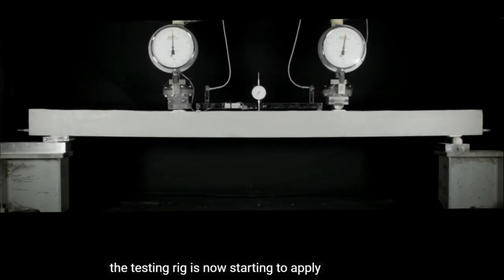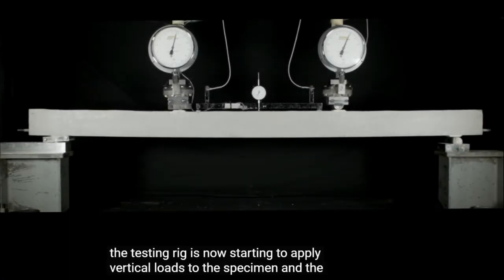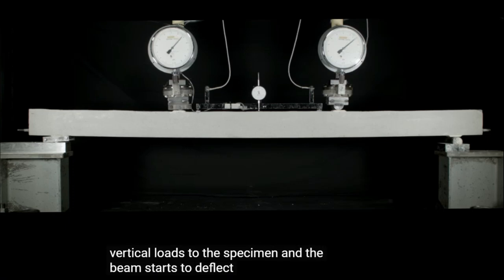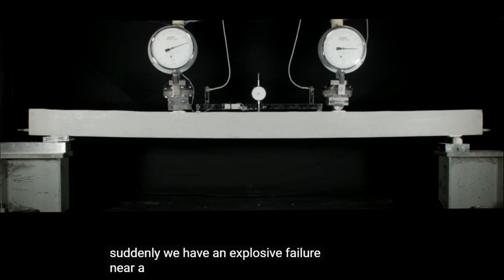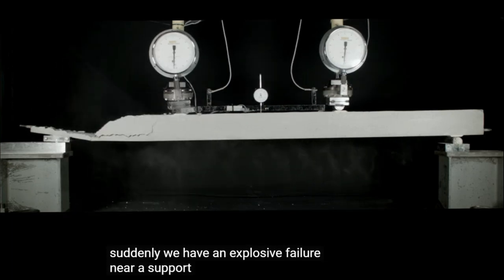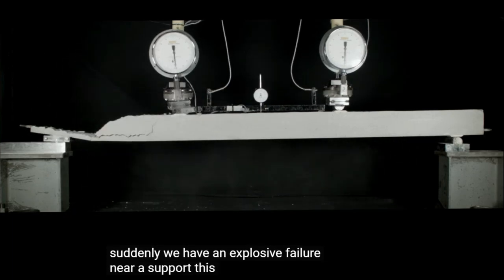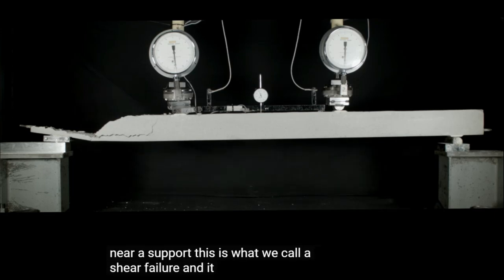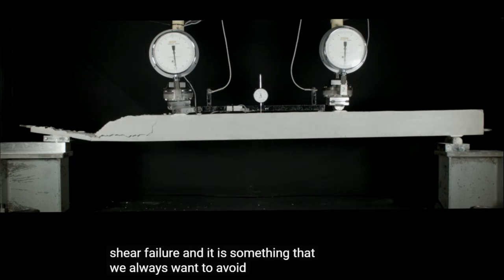The testing rig is now starting to apply vertical loads to the specimen, and the beam starts to deflect. Then quite suddenly, we have an explosive failure near a support. This is what we call a shear failure, and it is something that we always want to avoid.